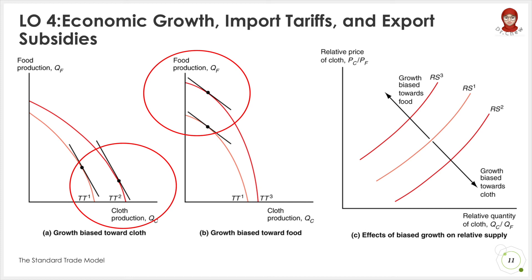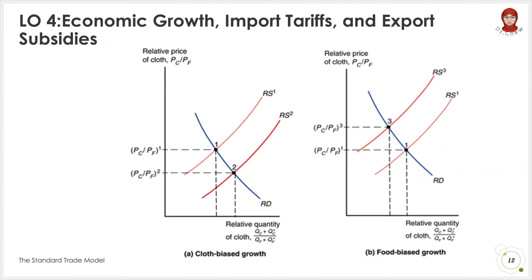We can see that RS2 is biased towards clothes, whereas RS3 is biased towards food. Specifically, when this shift in the world relative supply — as shown in figure A — shifts from RS1 to RS2, it results in a decrease in the relative price of clothes but an increase in the relative quantity of clothes. Whereas foreign growth strongly biased towards food will lead to a leftward shift of the RS curve from RS1 to RS3 for the world, and thus to a rise in the relative price of clothes and a decrease in the relative quantity.